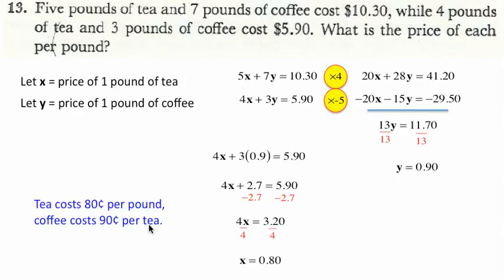To clarify, tea costs 80 cents per pound, and coffee costs 90 cents per pound. That's it for question 13. Have a good day.